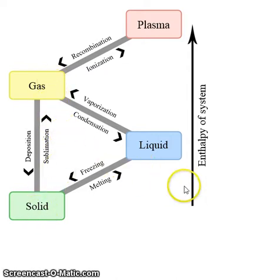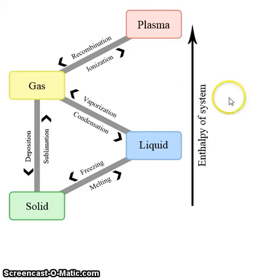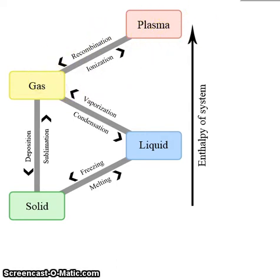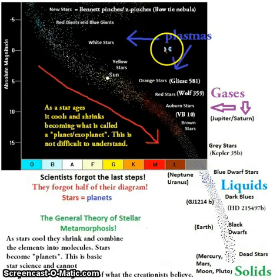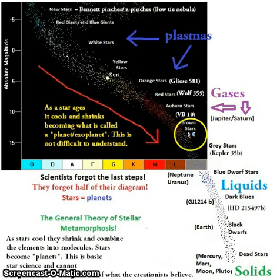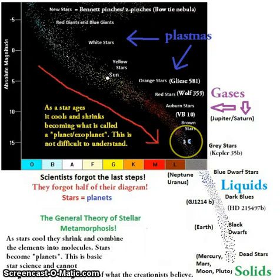This is what CO2 does when it's in solid form — it sublimes into gas. This is very important because the enthalpy of the system increases as you go up. So naturally, what would happen if you were to reverse that process? If a star is hot and plasmatic, it will recombine into gas. Hot plasmatic stars recombine into gas and they become what are called brown stars or brown dwarfs.